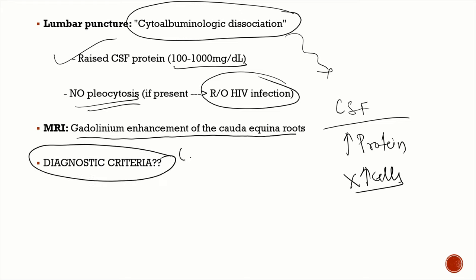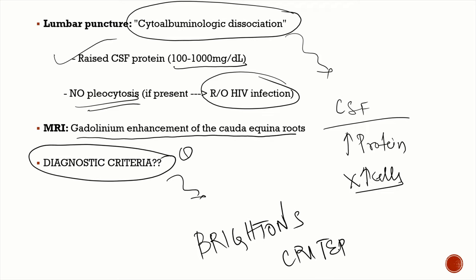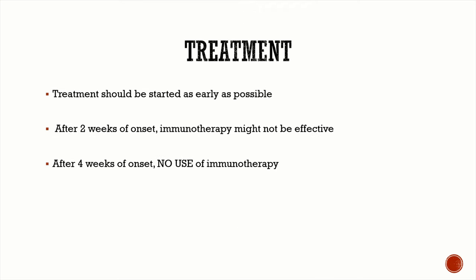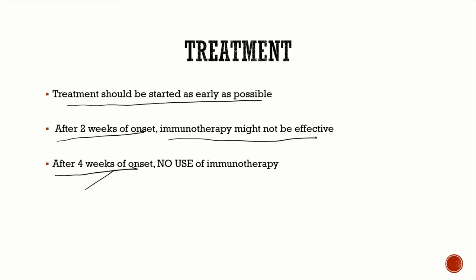GBS is time-sensitive — early diagnosis and treatment are critical. After two weeks of onset, immunotherapy may not be effective, and once the patient reaches the plateau phase at four weeks, immunotherapy has no role unless there is ongoing clinical evolution, which is rare.